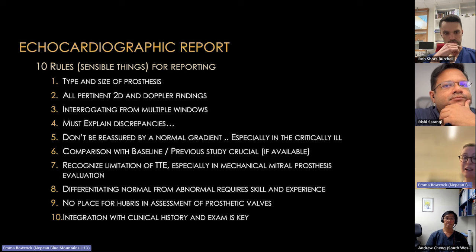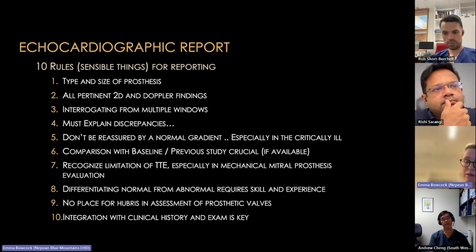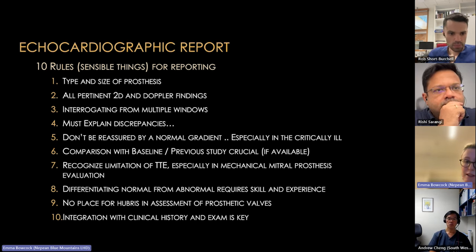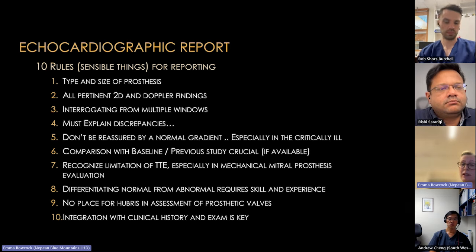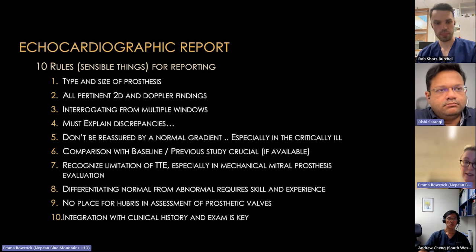Ten rules for prosthetic valve echo reporting: identify the type and size of valve; compare with baseline study; report all pertinent 2D and Doppler findings; interrogate from all windows; and explain discrepancies. In the ICU don't be falsely reassured by a normal gradient — in a low cardiac output state a valve can be pathologically obstructed yet show a normal gradient. Always compare with baseline.